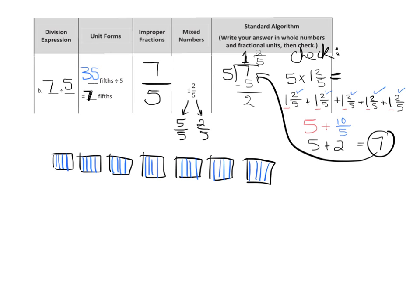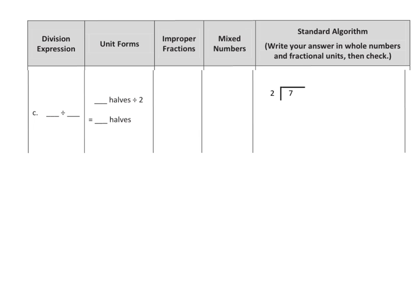And so that is that whole big problem right there. You may want to pause this and look at the completed screen to see if you can understand the connections between all these different ways of thinking about 7 divided by 5. This next one I'm going to go a little bit quicker. I'm going to start by dividing: 7 divided by 2 is 3 with 1 left over, so we have 3 and a half as our mixed number.